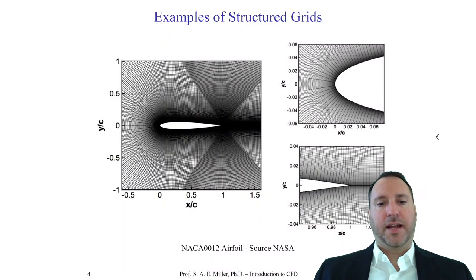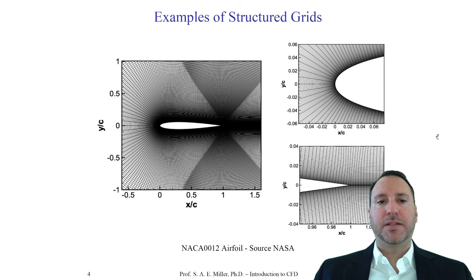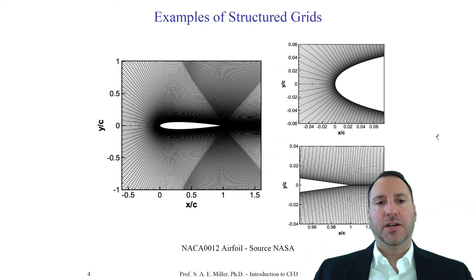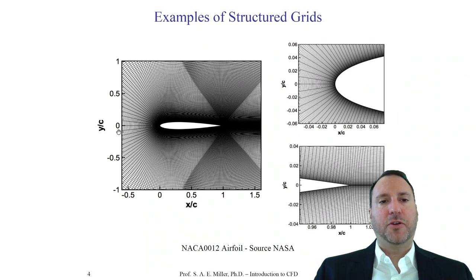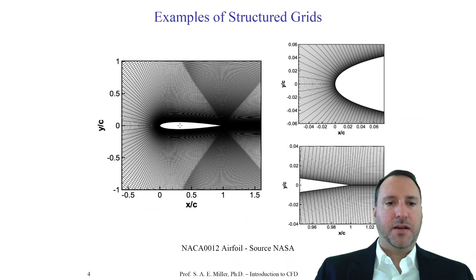Here's an example from NASA Langley of the NACA 0012 airfoil. NACA stands for National Advisory Committee for Aeronautics. The '12' means 12 percent thick relative to the chord — it's non-dimensional. The '00' means it's symmetric along the chord direction, i.e., the x equals zero plane. In the upper left you have a zoomed-in view of just the NACA airfoil. Typically flow moves from left to right. C is chord, not speed of sound. The airfoil is centered at its leading edge at x/c equals zero.